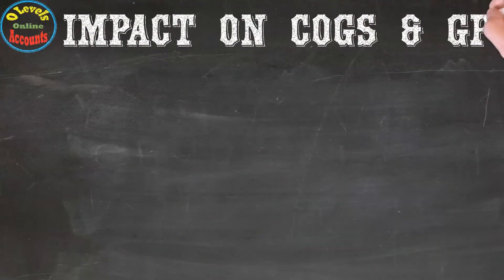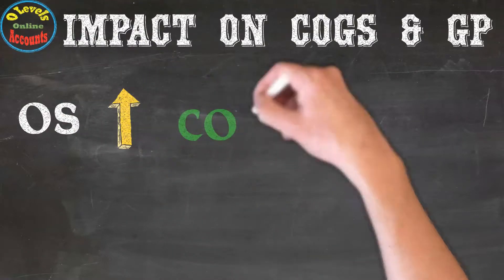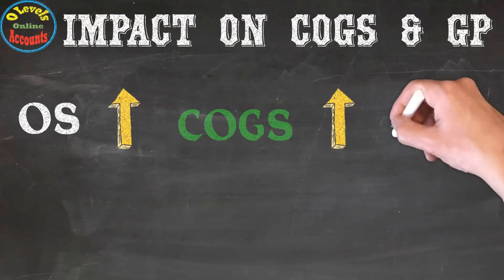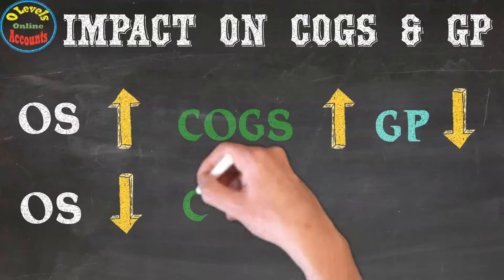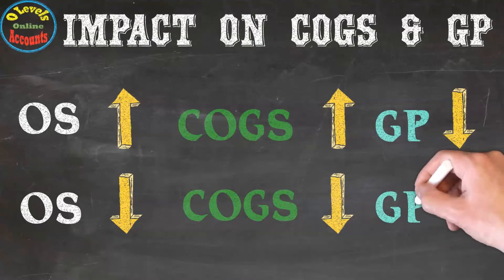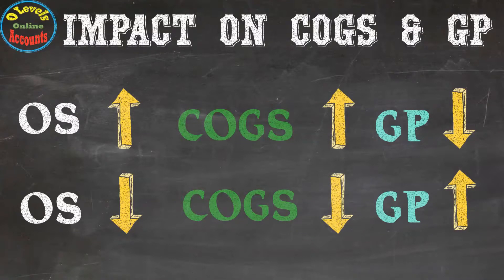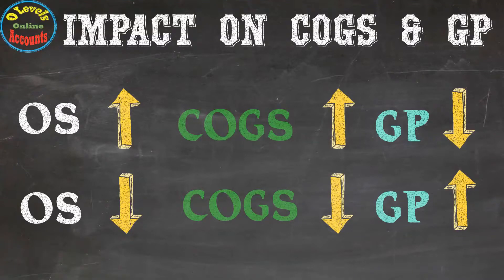Now let's check the impact of the components of cost of goods sold. First component — opening inventory: when opening inventory increases, cost of goods sold also increases, but gross profit decreases. When opening inventory decreases, cost of goods sold also decreases, but gross profit increases. Opening inventory has a direct relationship with cost of goods sold but an indirect relationship with gross profit.